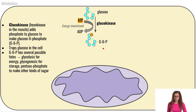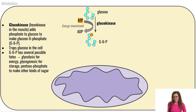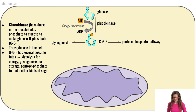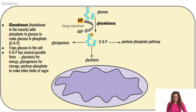From here, glucose-6-phosphate has many different directions it can go depending on the energy status of the cell. One option is glycogenesis, where it can be built into glycogen. Another direction is the pentose phosphate pathway, which we will talk about in detail in a moment. A third option is for glucose-6-phosphate to continue down glycolysis.